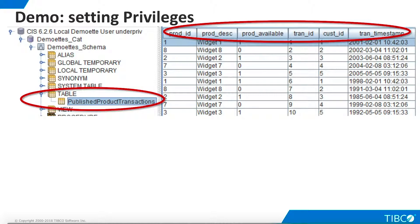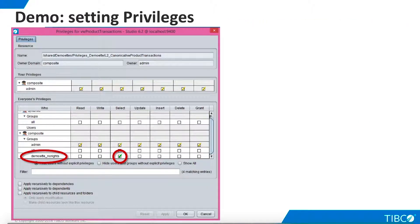Now, when our underpriv user signs in as an external client, he sees the table and data for which he has privileges. We can now go back to TDV Studio and look at the privileges for any involved resource and see the exact privileges that are assigned for any group or user. Our demo is complete.